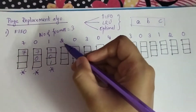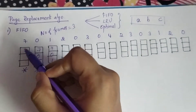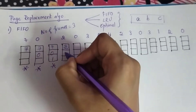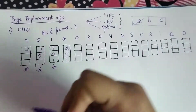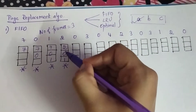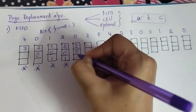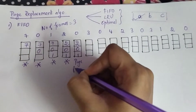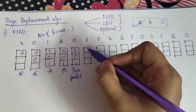Now you have to add two, so you will have to replace the first page that entered. Seven was the first page to enter, so you replace seven with two and you have zero and one. The first block was replaced, so put a tick against A and mark it as a page fault. But now zero is already present in the cell, so write it again and mark it as a page hit.